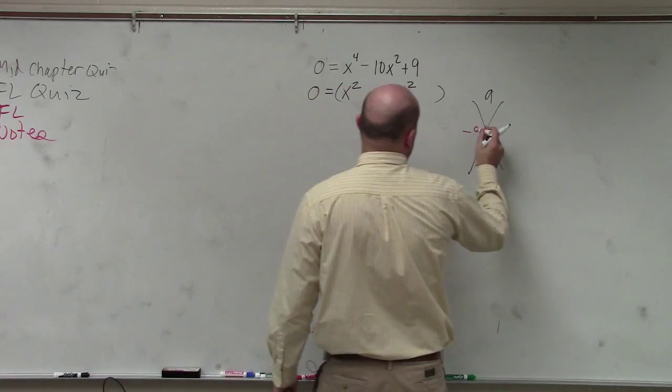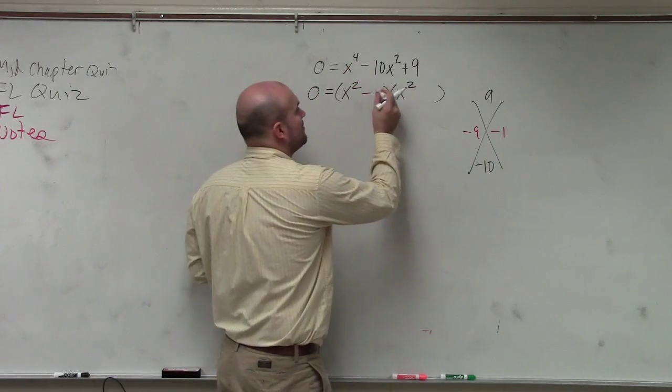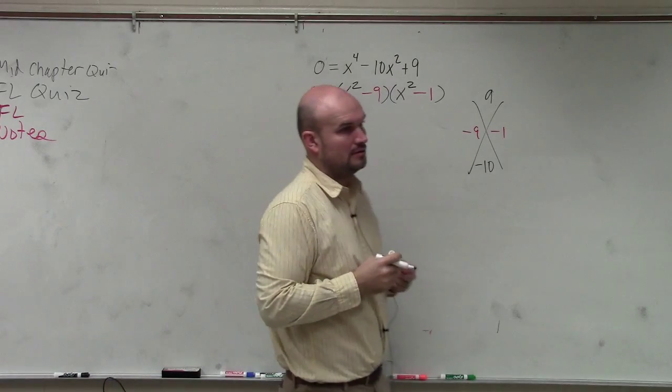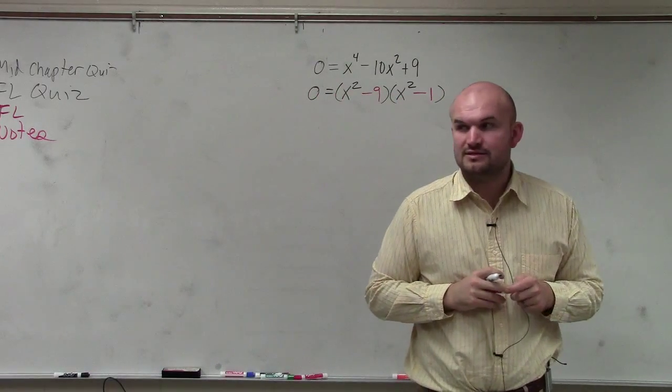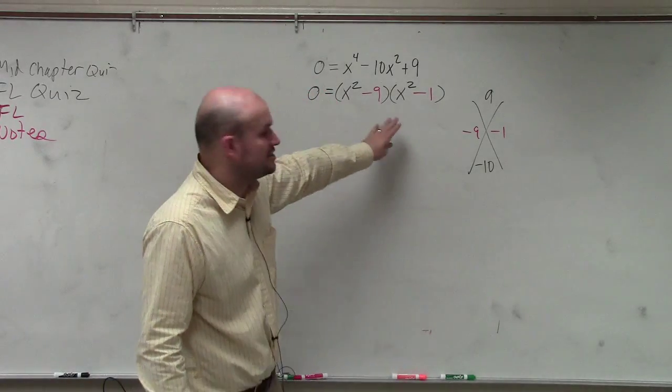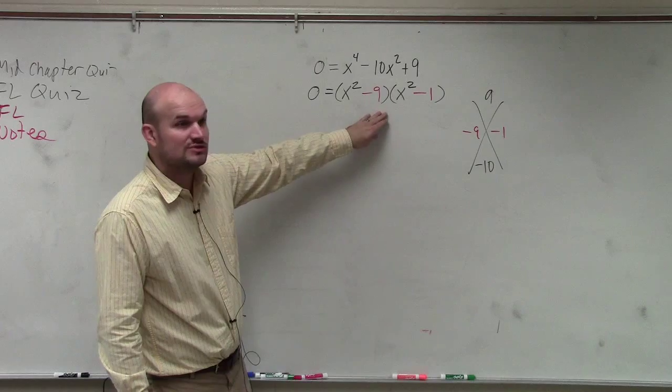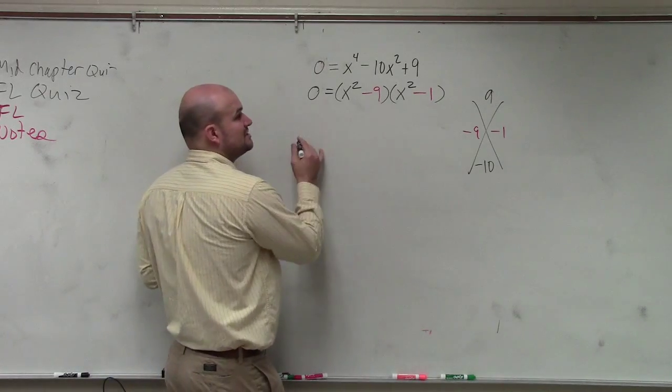Since my a is equal to 1, those are my factors. Perfect. Now, they said to solve, though. That's all I asked you guys to do was just to factor this. So now, for tonight's homework, you're going to solve this. To solve this, we have to use the zero product property.